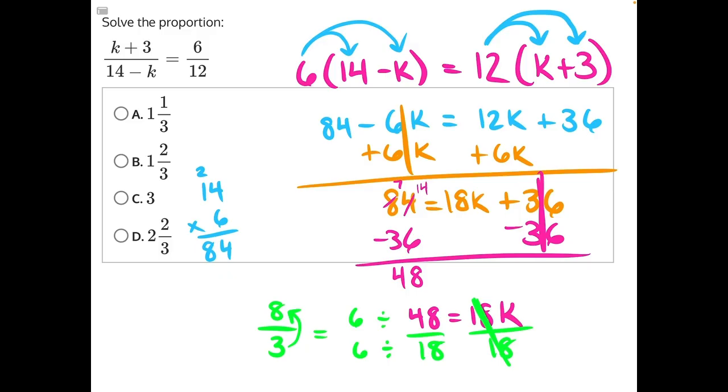3 times 2 gives us 6, and 8 minus 6 gives us 2. So we have two whole numbers with 2/3 left over. 2 and 2/3 makes answer choice D our correct answer.